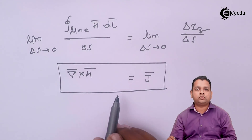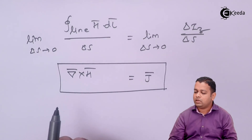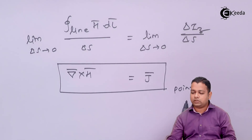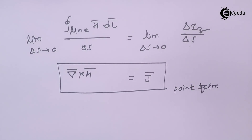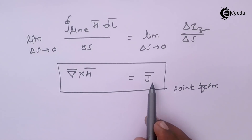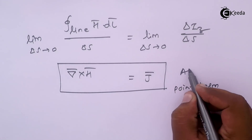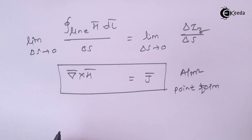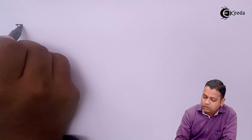What we have derived is the point form or differential form of Ampere's Circuital Law: del-bar cross H-bar equals J-bar, with units of amperes per meter squared. Since H-bar can be given in Cartesian, cylindrical, or spherical coordinates, we require the formula for the curl of H-bar in all three coordinate systems.